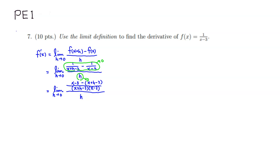Now we can cancel things. The x terms cancel, and the negative 3 terms cancel, leaving a negative sign and h in the numerator. Since we're dividing by h, negative h divided by h gives negative 1. Putting it all together, the limit as h approaches 0 is negative 1 over the quantity x plus h minus 3, times x minus 3.